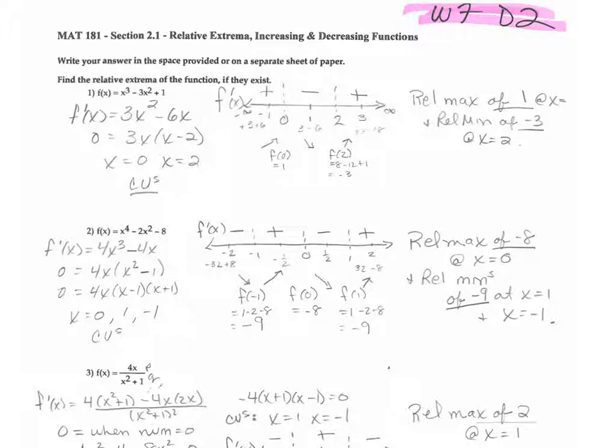So we take a look at this first guy. For him, we're going to need to take the derivative first, and we do that. Then we set it equal to zero to find the critical values. You take the zero property and set each one equal to zero. That gives you the critical values.